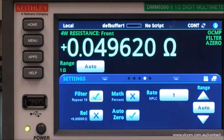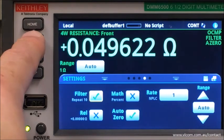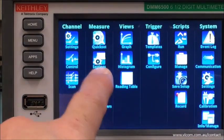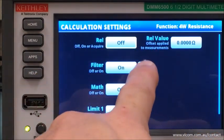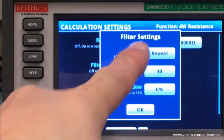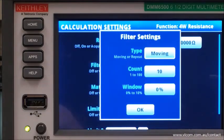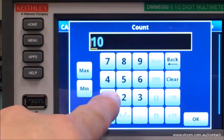I want to smooth that out a little bit more, so I go to menu, calculations. Let's adjust my filter. I want to make it a moving filter with a count of 100.